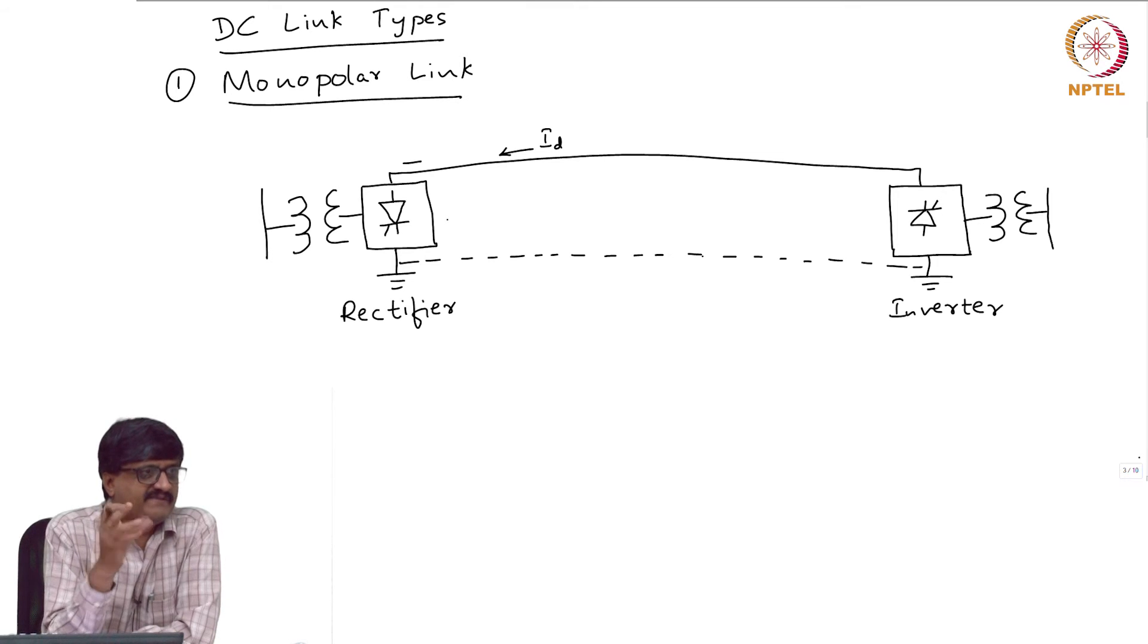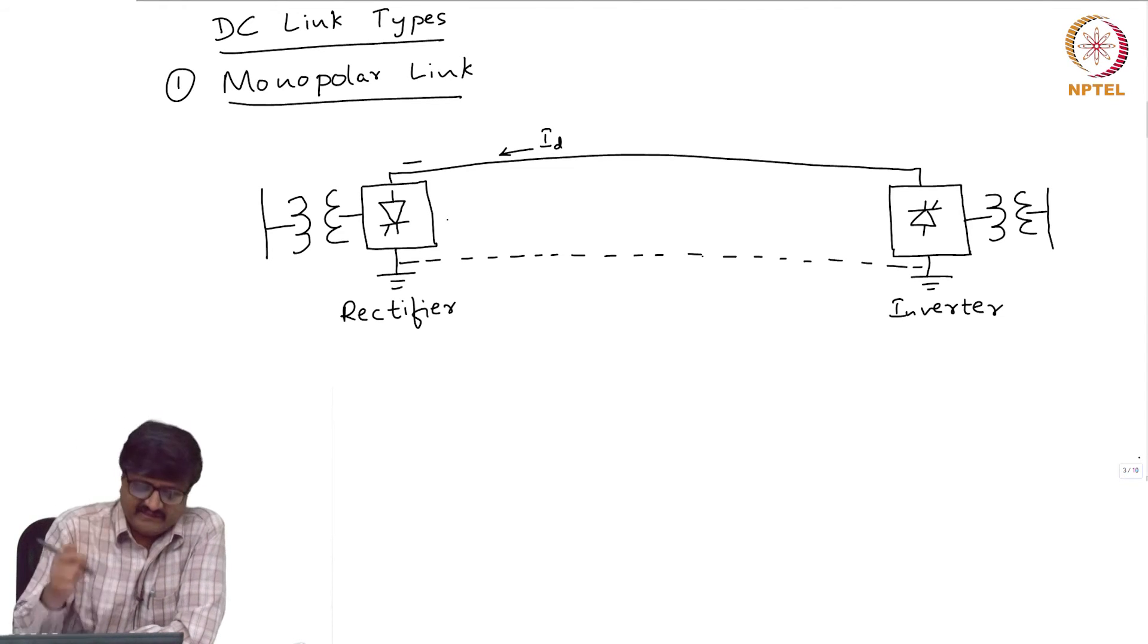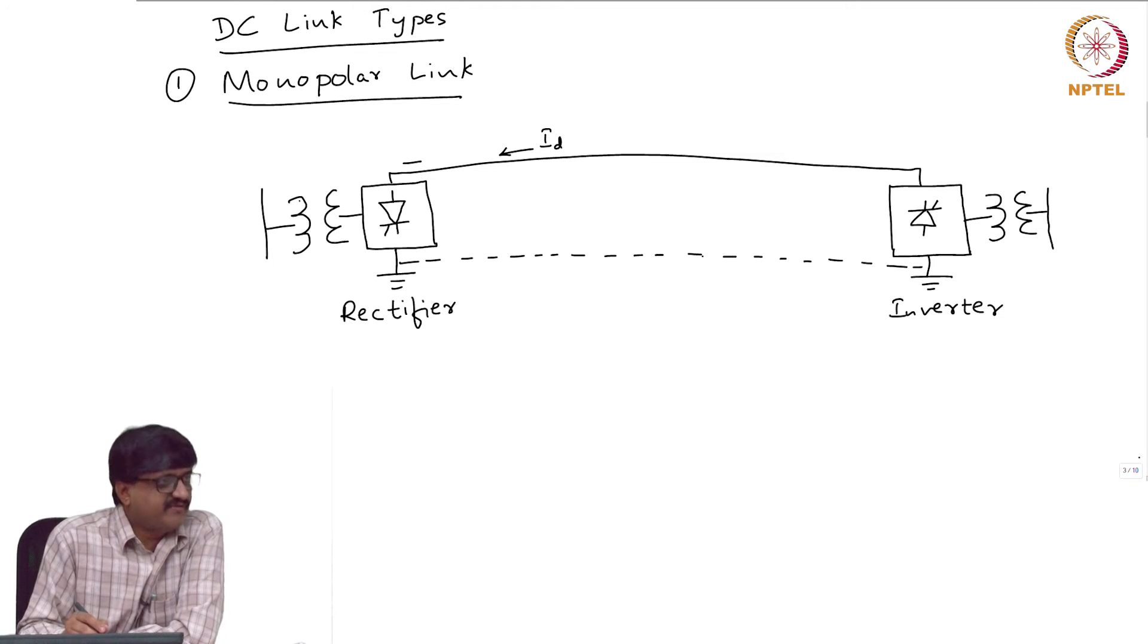If you look at a 12-pulse converter, there is a Y-Y and Y-delta transformer. There are two transformers and two 6-pulse converters. So that entire arrangement is shown as one transformer and one box with a thyristor. So this is the schematic representation of a 12-pulse converter.